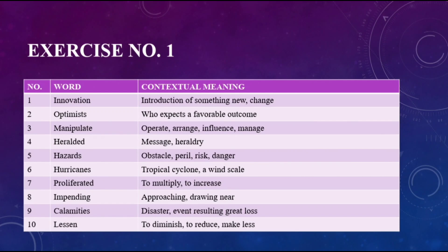Coming to exercise number one, which consists of words and their contextual meanings. The first word is 'innovation,' which means introduction of something new or change. 'Optimists' means those who expect a favorable outcome. 'Manipulate' means to operate, arrange, influence, or manage. 'Heralded' means to announce or usher in. 'Hazards' mean obstacles, peril, risk, or danger. 'Hurricane' means tropical cyclone. 'Proliferate' means to multiply or increase. 'Impending' means approaching. 'Calamities' means disasters or events resulting in great loss. The last one is 'lessen,' which means to diminish, reduce, or make less.